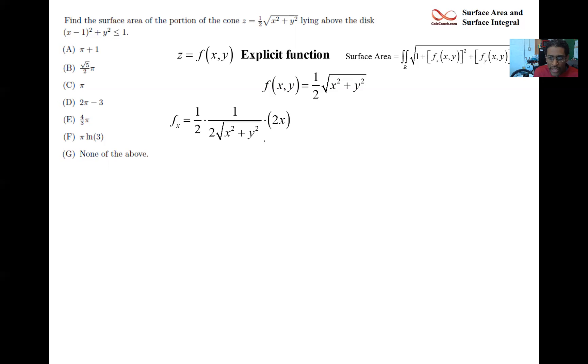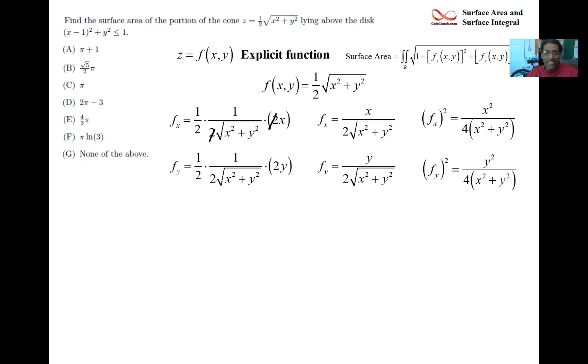The y partial is not going to look different, it's going to be the same except it's going to be y on top. We need to square these guys, we just square the top, square the bottom, works out nicely, don't forget to square the two. Same thing for the y partial squared. They add together nicely because they have the same denominator, and so watch what happens when they add together: we have an x² + y² now in the numerator and in the denominator. That's beautiful, it cancels out nicely, and we end up with 1 + 1/4. If we end up with a constant it's great. When the radical part of ds is a constant it's great because when we go to the formula we just put that part in, which is a constant, we can pull it out.